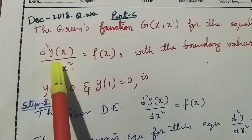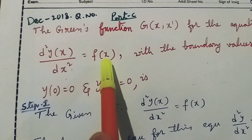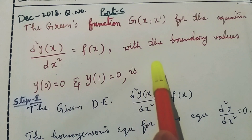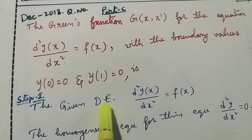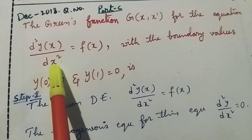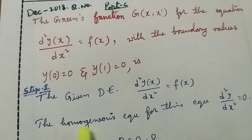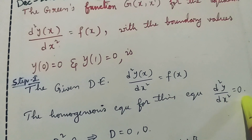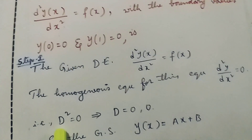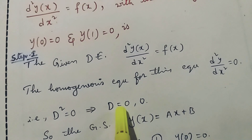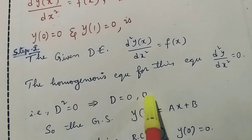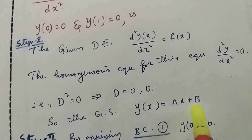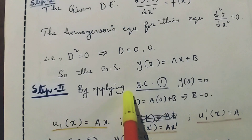Now the second problem from December 2018: find the Green's function G(x, x') for the differential equation d squared y by dx squared equal to f(x), with boundary values y of zero equal to zero and y of one equal to zero. The homogeneous auxiliary equation gives d squared equal to zero, so roots are zero and zero. The general solution is y of x equal to ax plus b.